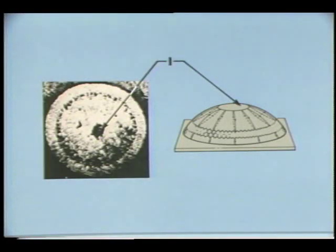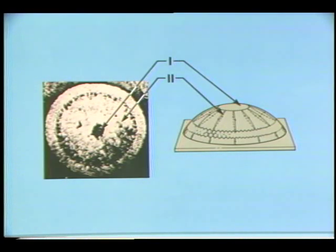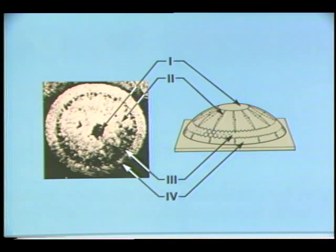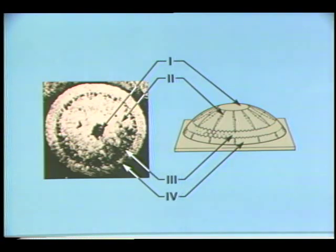Region 1, located at the top of the drop, is stagnant. Region 2 consists of weak clockwise convection currents driven by buoyancy force. Region 3 is composed of a few layers of hexagonal flow cells. Finally, region 4 has relatively stronger counterclockwise convection currents, which according to our computational results are driven by surface tension.